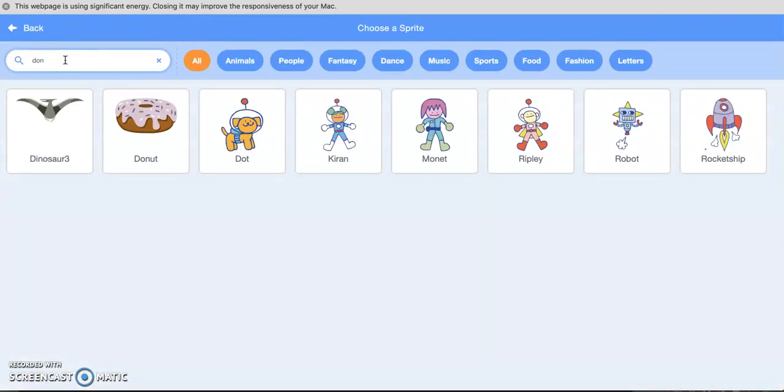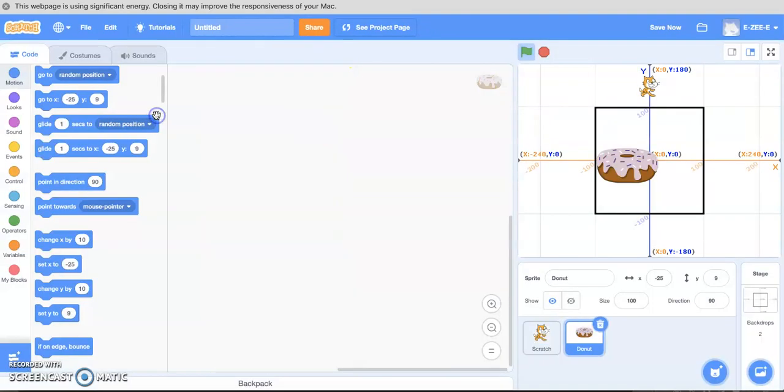We're just gonna type in donut which is fine. Let's choose a donut here. Got a big fat donut right there in the center. Set that size to about 30. Now he's small and put him up here beside Scratch.